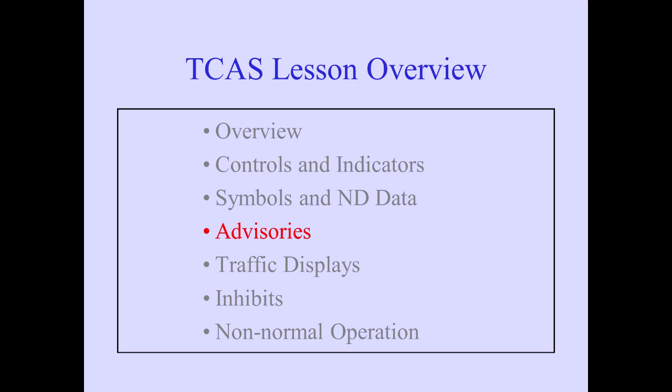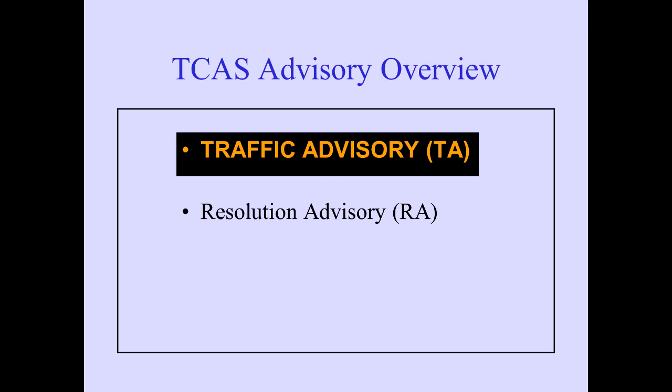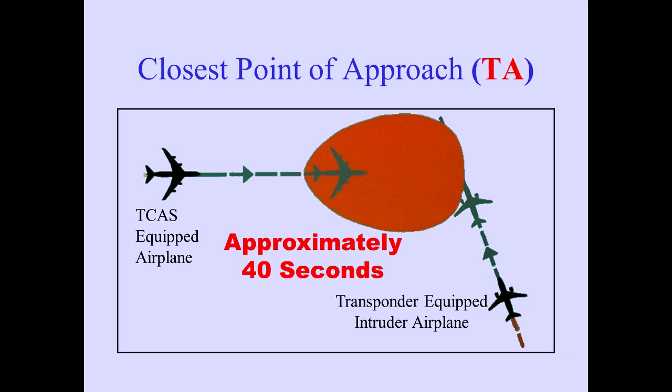Now let's discuss advisories provided by TCAS. TCAS issues traffic advisories and resolution advisories. First, we'll discuss the traffic advisory, also known as a TA. A TA is considered a caution and is issued when TCAS detects a transponder-equipped aircraft and predicts it will pass close to your airplane, but with safe separation. The TA is issued approximately 40 seconds before the intruder aircraft is predicted to reach the closest point of approach to your airplane.